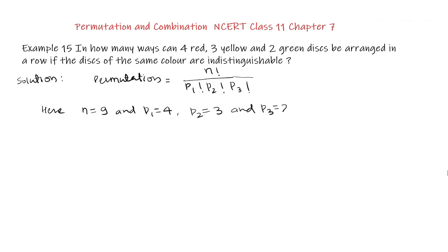There are 2 green disks. So substituting these values in the formula we get permutation equals factorial 9 upon factorial 4 into factorial 3 into factorial 2. So this is equal to 9 × 8 × 7 × 6 × 5 × 4 factorial upon 4 factorial into 3 factorial.